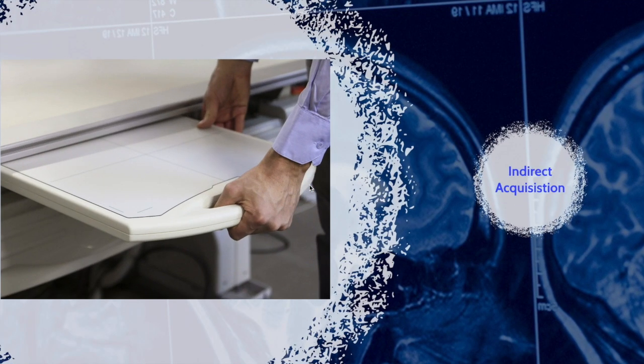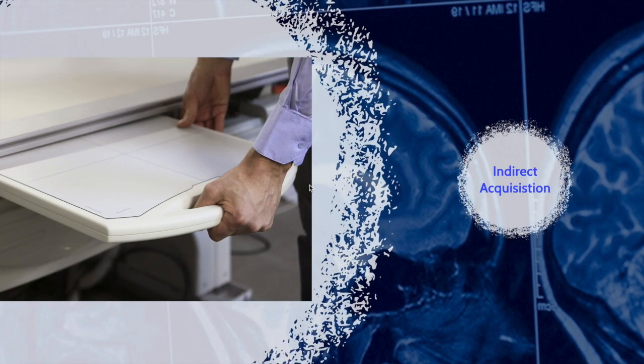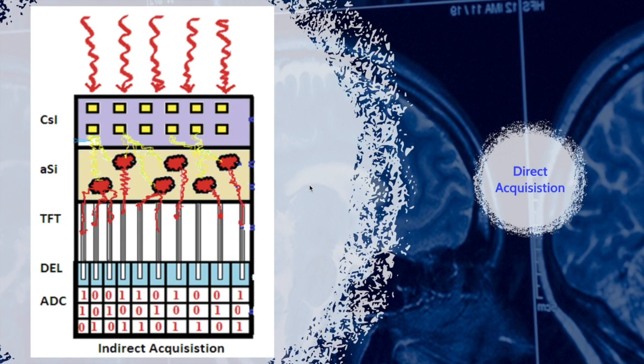Here is an image of the flat panel detector being placed inside the table. Here is one of the systems for the flat panel detector, indirect acquisition, that converts x-ray photons into visible light.